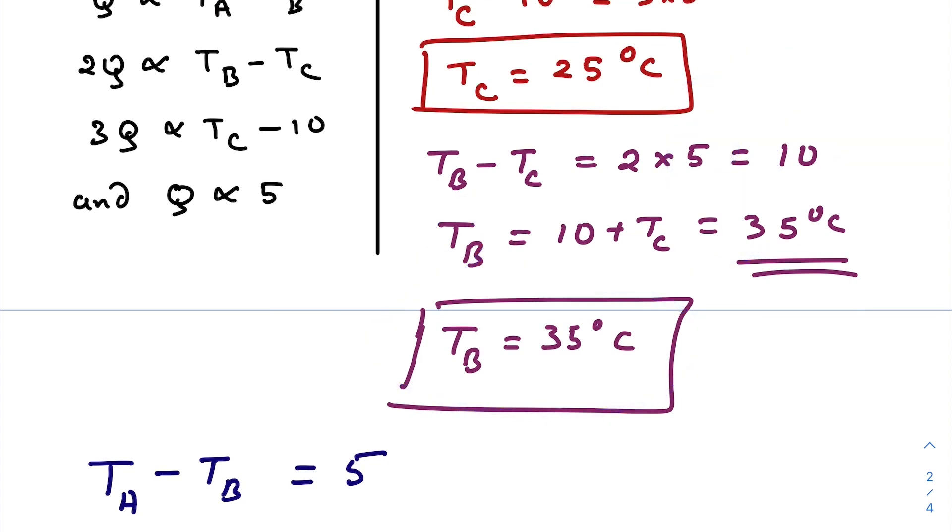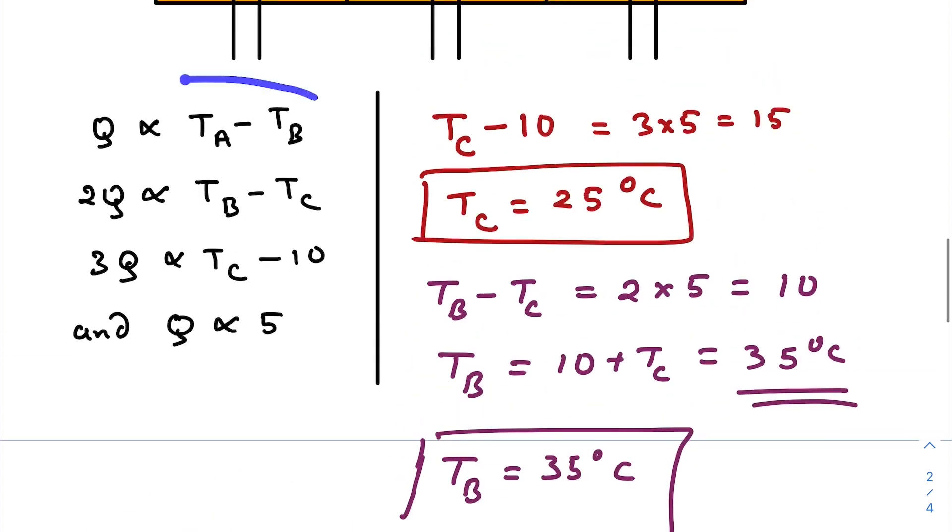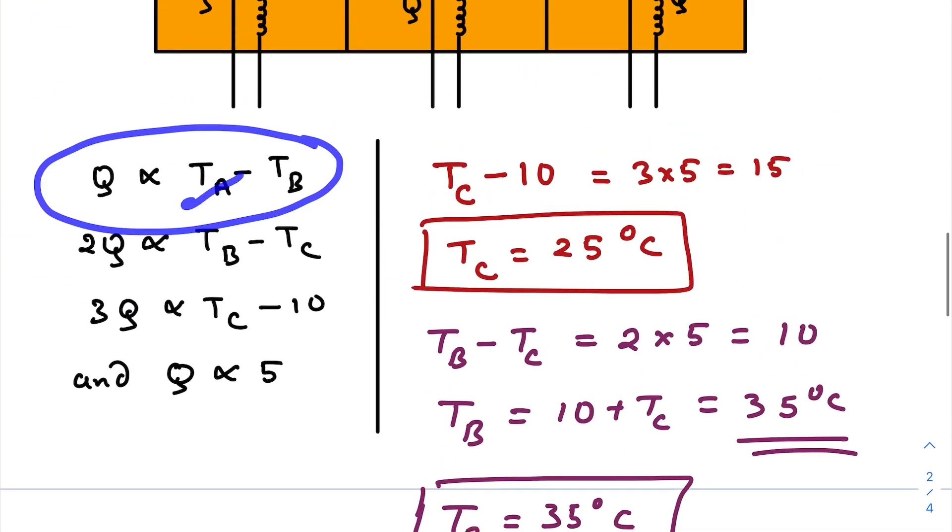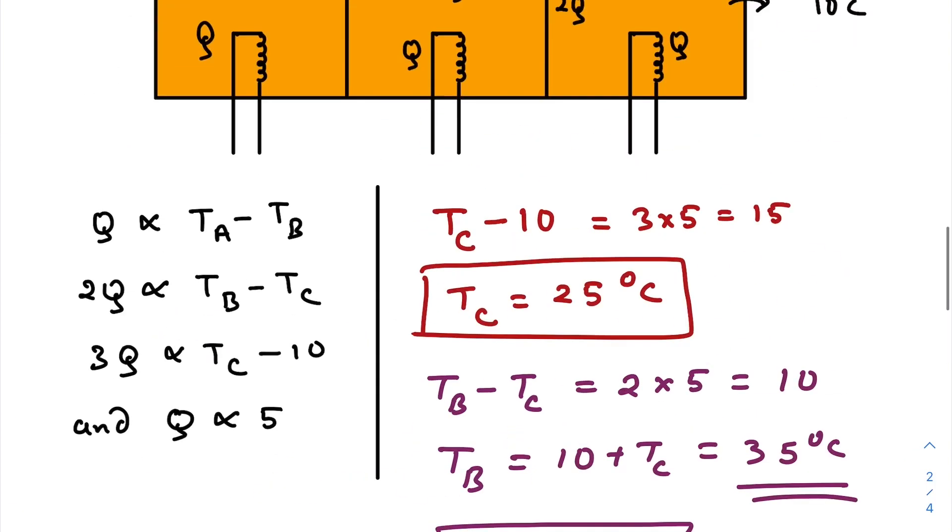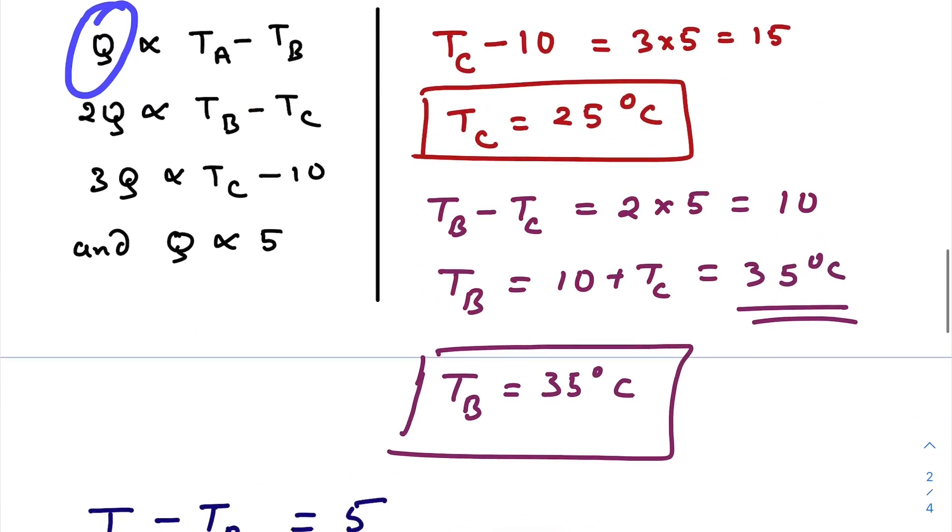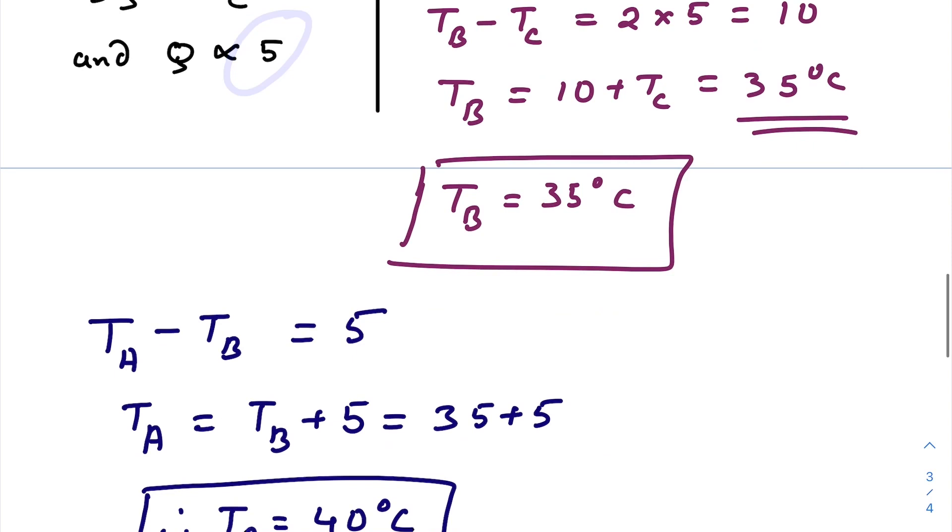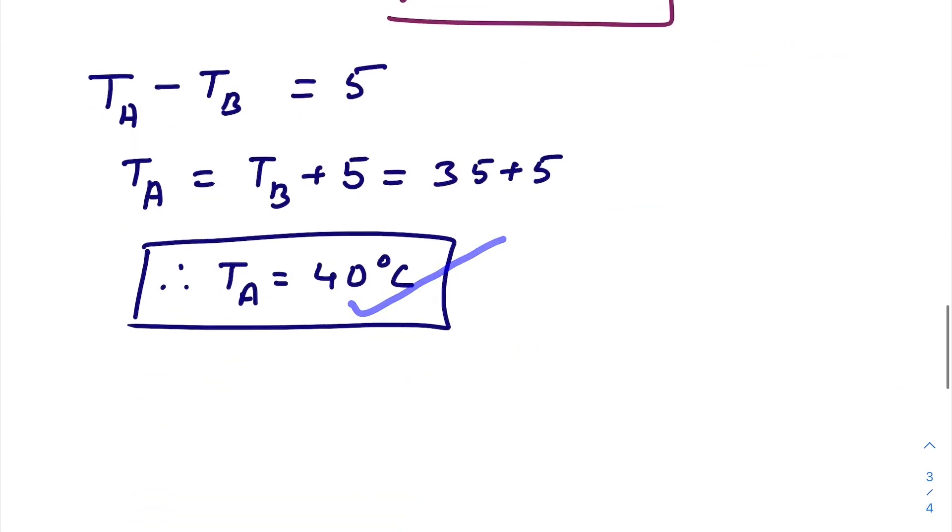Similarly we can use this one, so T_A minus T_B equals 5, how? Because Q and Q is directly proportional to 5, and that proportionality constant will get cancelled out, simple. So from there we can get T_A equals 40 degrees Celsius, right?